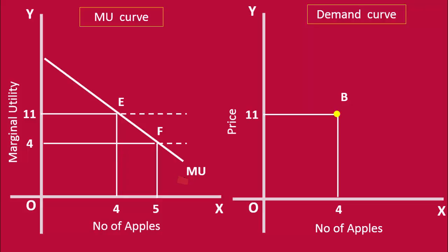At 4 rupees, the consumer buys 5 apples. This is another point on the demand curve. We shall fix it as point C.